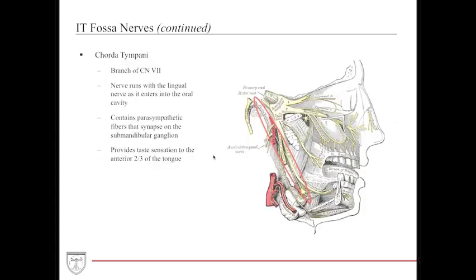The chorda tympani is a branch of cranial nerve seven. It provides taste sensation to the anterior two-thirds of the tongue, while the posterior one-third is supplied by the glossopharyngeal nerve, cranial nerve nine. The chorda tympani hijacks its pathway along the lingual nerve as it enters the oral cavity and also contains parasympathetic fibers that synapse on the submandibular ganglion.